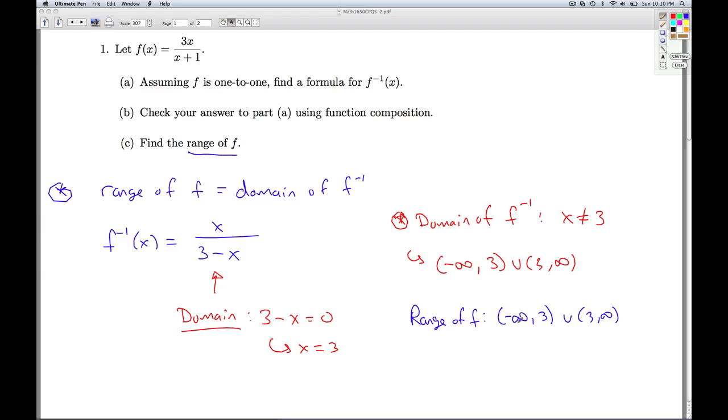And if you have the time, it's good preparation for the exam to actually take this function f of x and go through the six-step process we talked about in chapter 4. And you'll see that you've got a horizontal asymptote at y equals 3. And, in fact, it never crosses that horizontal asymptote, which explains the gap in the range at y equals 3. Well, that'll do it for number one.